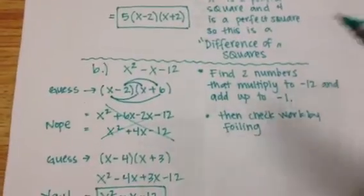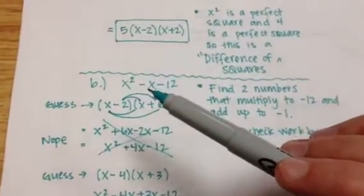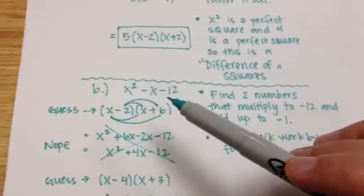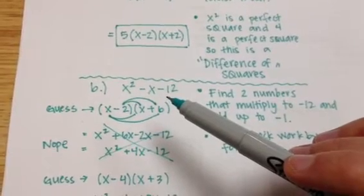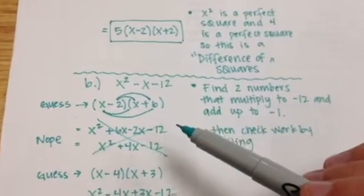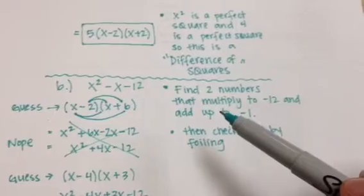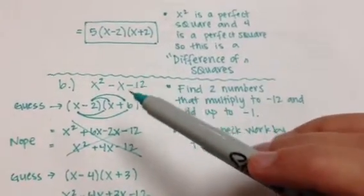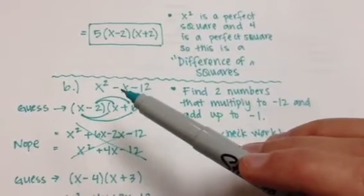For part B, when you start with something like x squared minus x minus 12, since there's nothing in common there that I can factor out, I'm not going to factor out a common term. So instead, I'm going to look for two numbers that multiply to negative 12 and add up to negative 1. So I'm looking at this number first, two numbers that multiply to this and add up to the middle number.